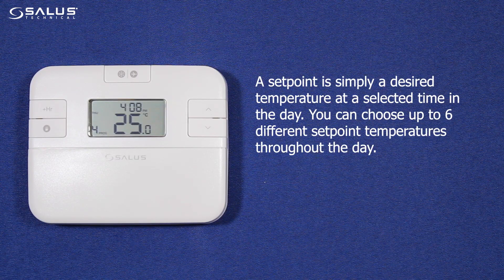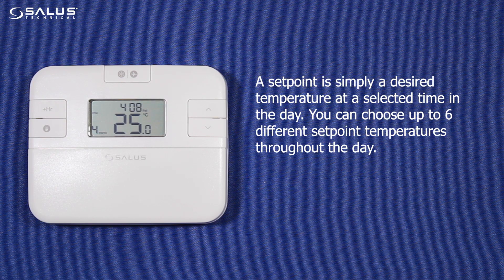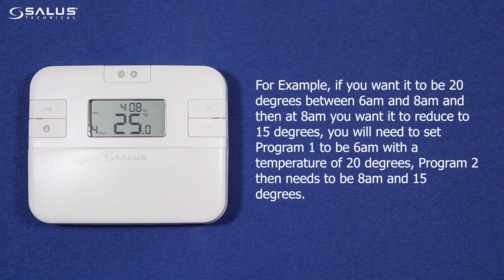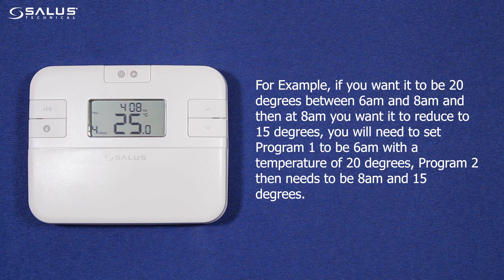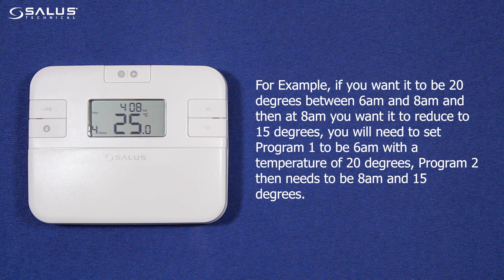A set point is simply a desired temperature at a selected time in the day. You can choose up to six different set point temperatures throughout the day. For example, if you want it to be 20 degrees between 6 a.m. and 8 a.m., and then at 8 a.m. you want it to reduce to 15 degrees, you will need to set program 1 to be 6 a.m. with a temperature of 20 degrees. Program 2 then needs to be 8 a.m. and 15 degrees.